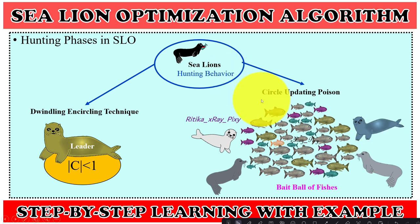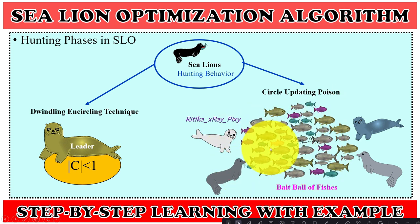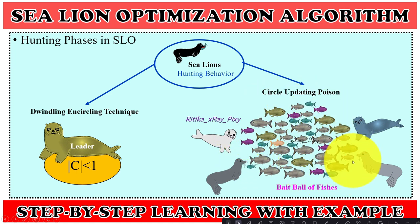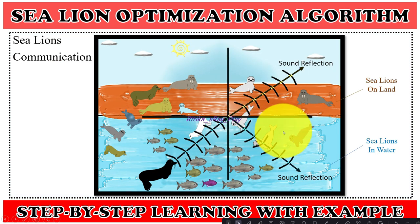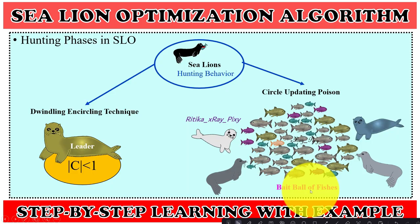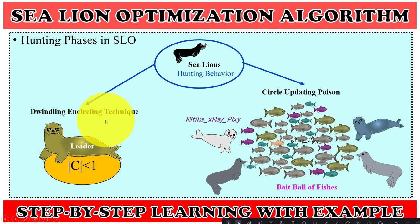Two important hunting phases are simulated in this algorithm. First, circle updating position: sea lions chase a bait wall of fishes and hunt them starting from the edges. As discussed, in group hunting when any sea lion traces plenty of food they call other members to join. Second, the windling and circling technique: sea lions' behavior depends on the value of C. The value of C is calculated and then the corresponding behavior is performed, which will be discussed in detail.